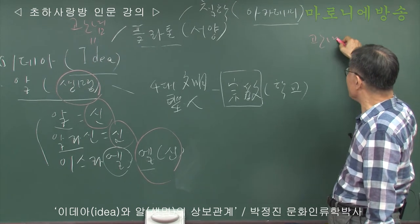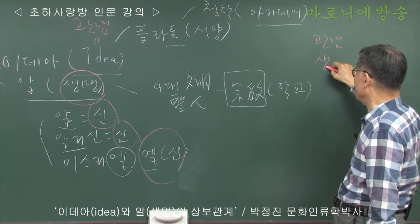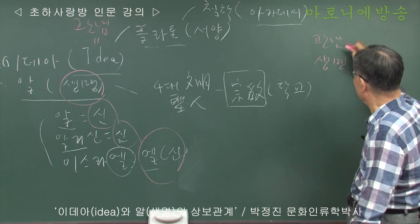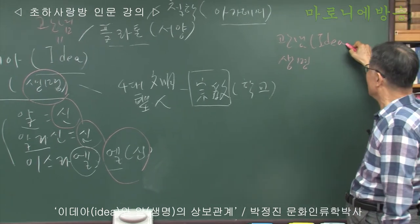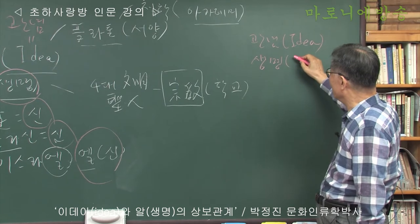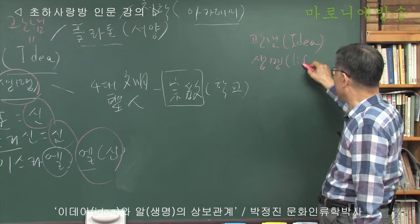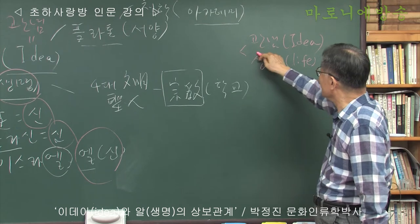그럼 어떻게 보면 관념과 문명을 뭐 크게 보면 말이죠. 관념과 생명의 대결이야. 생명. 이런 라이프라고 볼 수 있죠. 생명.